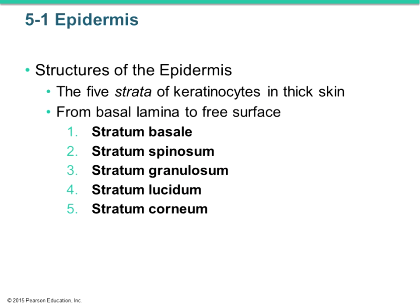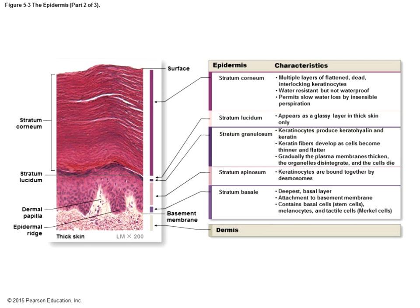The epidermis or thick skin consists of five strata, going from the basal membrane up to the free surface: stratum basale, spinosum, granulosum, lucidum, and corneum. You can see the dermis at the bottom, then the cells starting at stratum basale working up through spinosum, granulosum, lucidum, and corneum at the top.